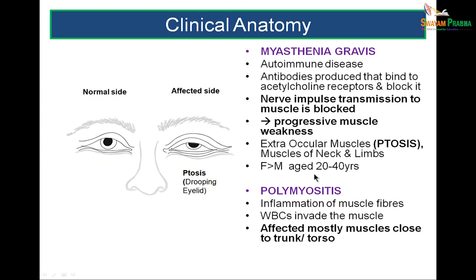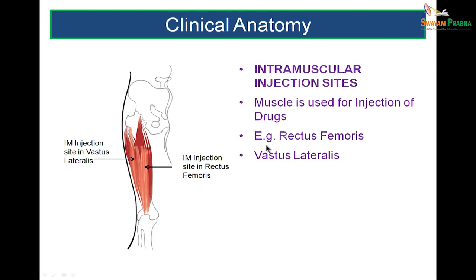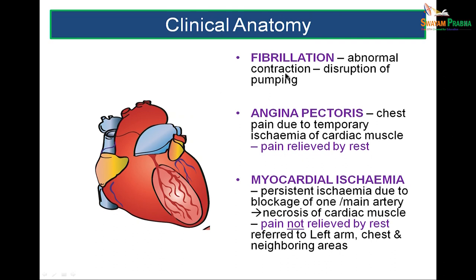Polymyositis is inflammation of muscle fibers where WBCs invade them, mostly affecting muscles close to the trunk. Intramuscular injection sites include the rectus femoris and vastus lateralis. In cardiac muscle, fibrillation is abnormal contraction or disruption of the heart muscle's pumping. Angina pectoris is pain due to ischemia of the cardiac muscle, relieved by rest. Myocardial ischemia is persistent ischemia due to blockage of a main artery; pain is not relieved by rest because of necrosis of cardiac muscle fibers, causing pain along the left arm, chest, and neighboring areas.